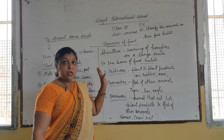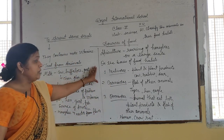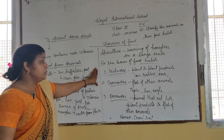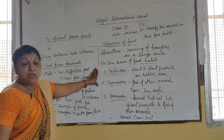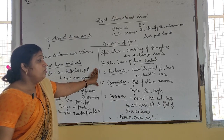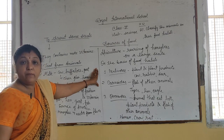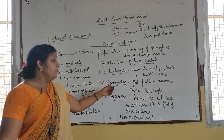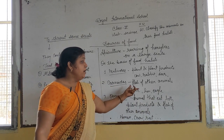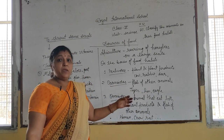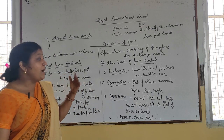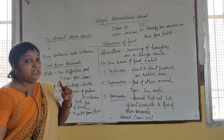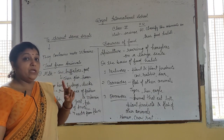The second type is carnivores. Carnivores means flesh-eaters — animals which eat the flesh of other animals are called carnivores. Examples of carnivores are tiger, lion, and eagle. Flesh means meat.